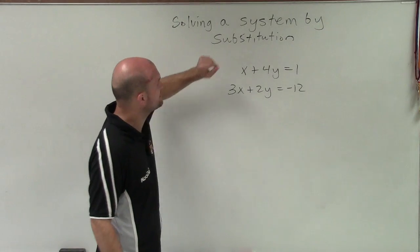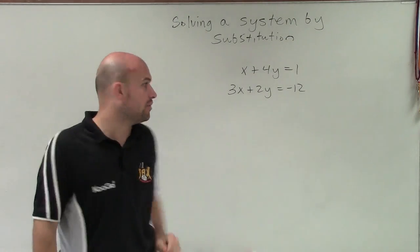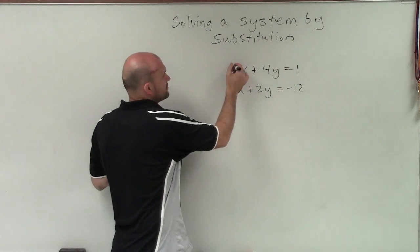Welcome. So what I have here is x plus 4y equals 1, and 3x plus 2y equals negative 12.